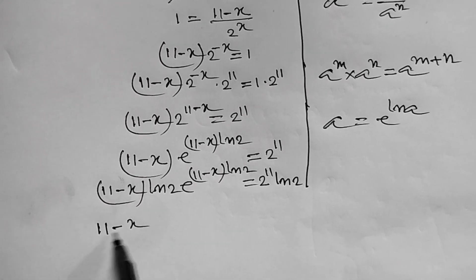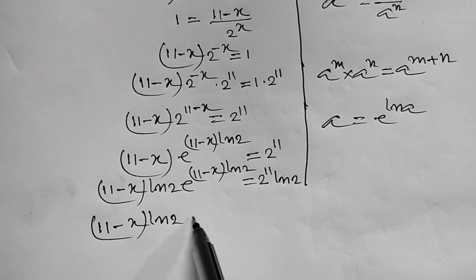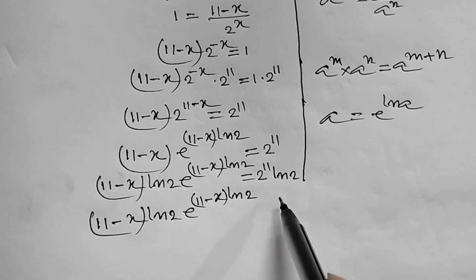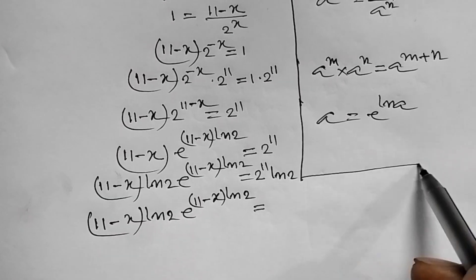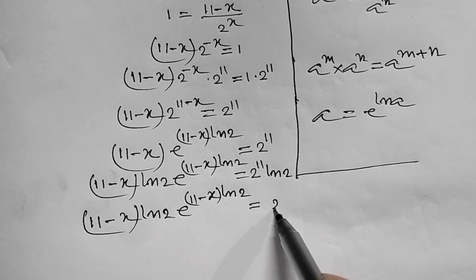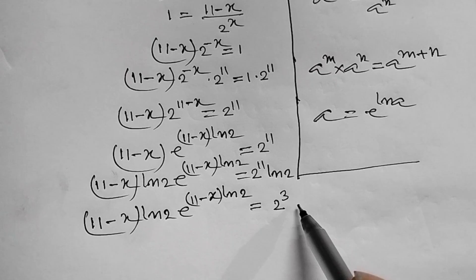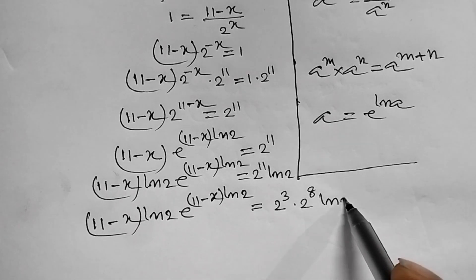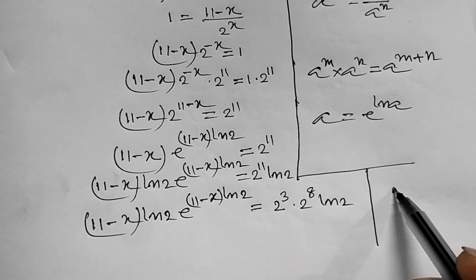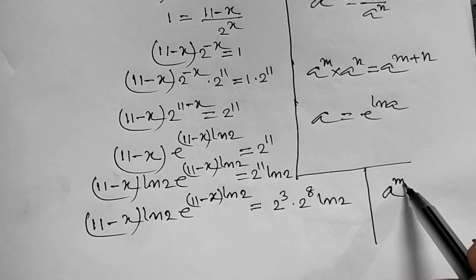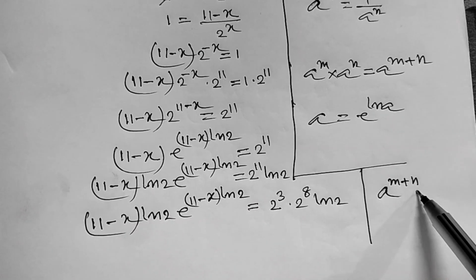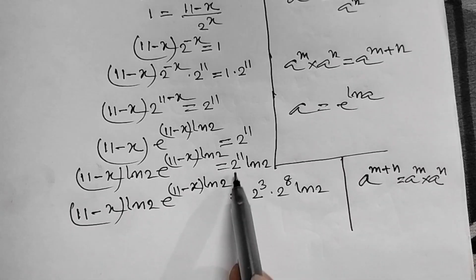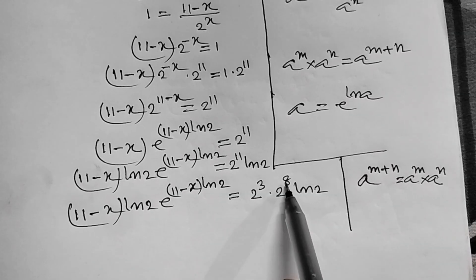Therefore, 11 minus x times ln of 2 times e to the power 11 minus x times ln of 2 equal to 2 to the power 11 times ln of 2. Now, this 2 to the power 11 can be written as 2 to the power 3 times 2 to the power 8 times ln of 2. Since we know the formula a to the power m plus n equal to a to the power m times a to the power n.